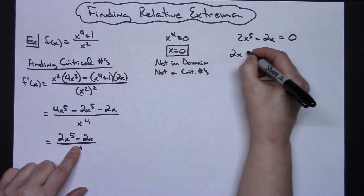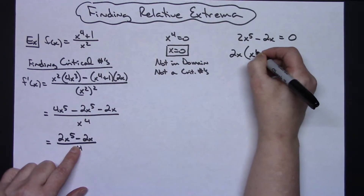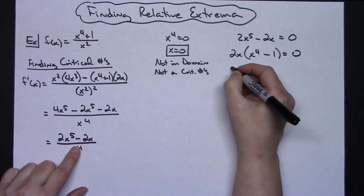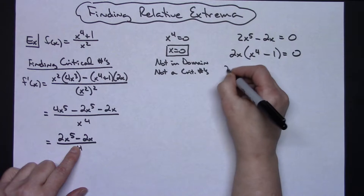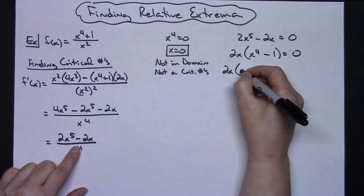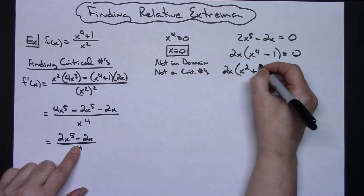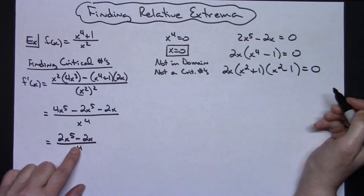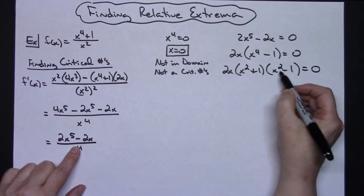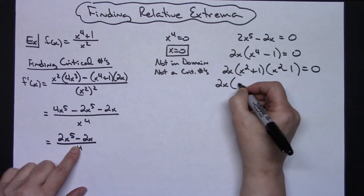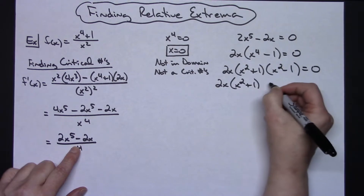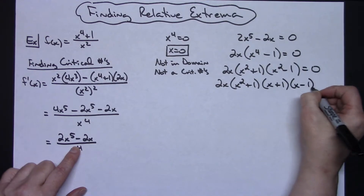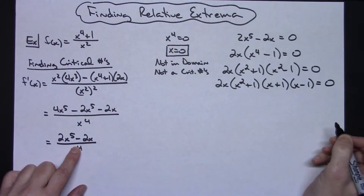Let's pull out a 2x, that's going to leave me with x to the fourth minus 1. Factoring this further, I'm going to have 2x times x squared plus 1, times x squared minus 1 — that's the difference of two squares. And here is another difference of two squares, so: 2x times x squared plus 1, times x plus 1, times x minus 1. Now I have completely factored this.